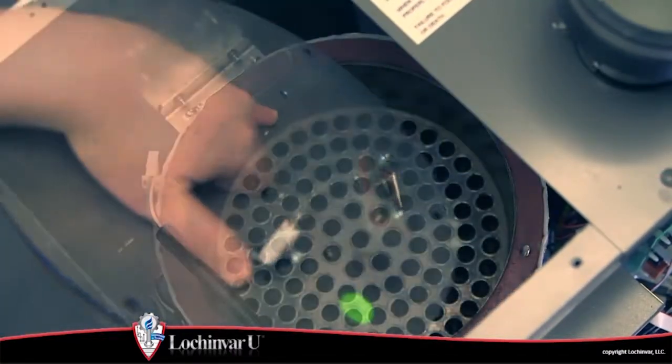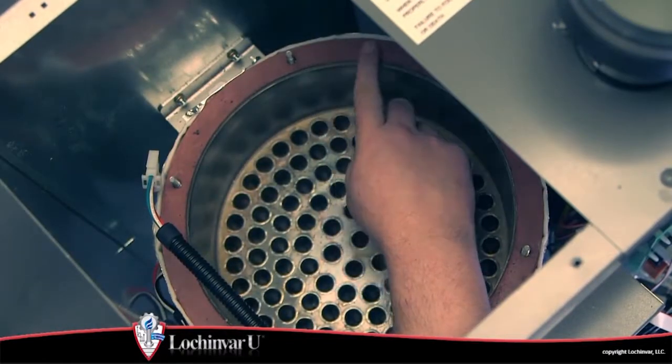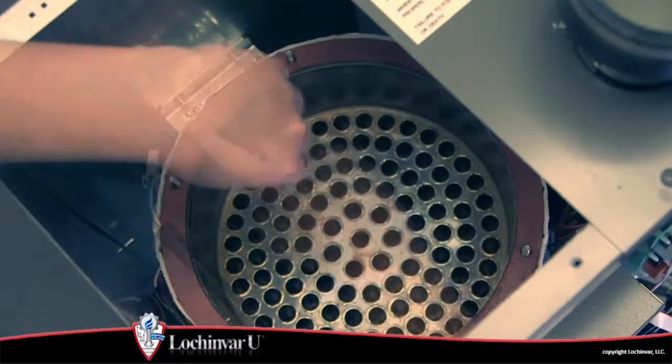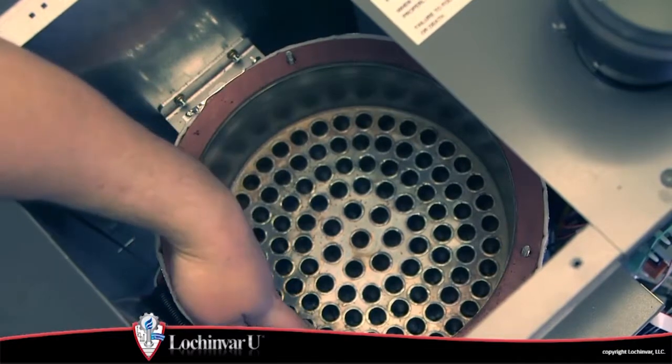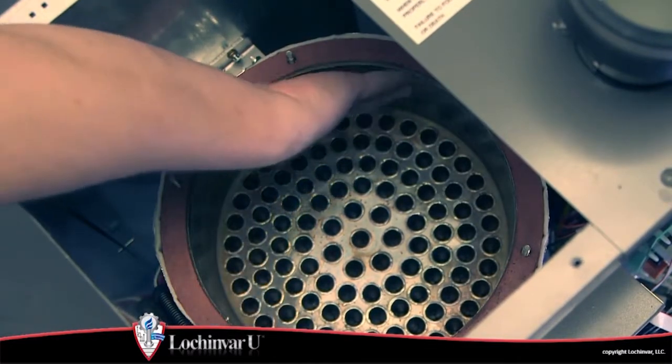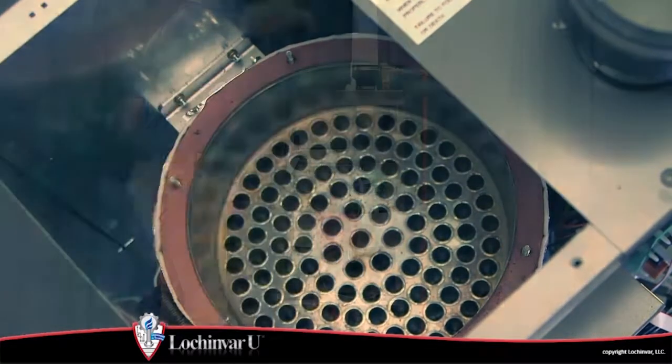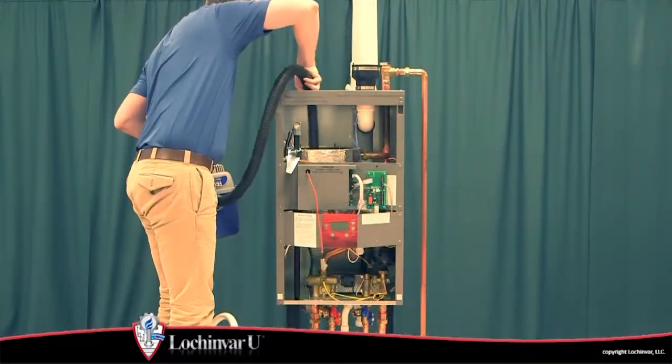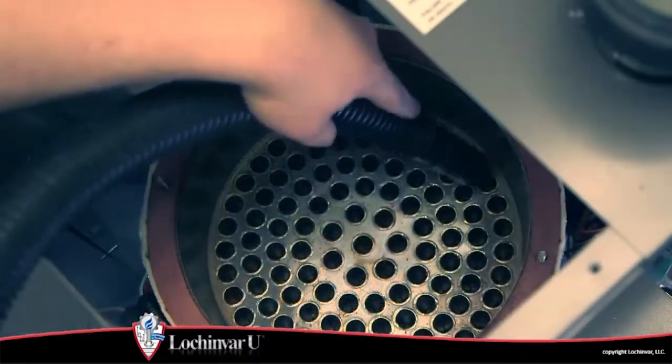A gasket is used to seal between the heat exchanger top plate and the heat exchanger. Now inspect the heat exchanger surface and combustion chamber wall for any soot deposits or dirt accumulation. Using a vacuum cleaner, remove any loose debris from the heat exchanger.